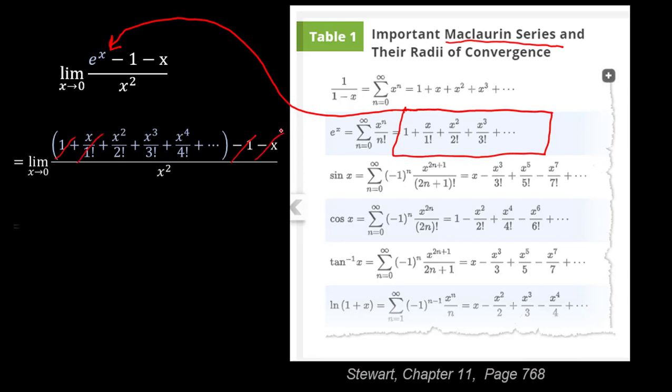So doing those simplifications, we end up with the limit as x approaches zero of x squared over two factorial plus x cubed over three factorial, et cetera, all over x squared. Now we haven't made any clear progress at this point because if we just went ahead and plugged in x equals zero, we're still going to end up with a bunch of zero terms on the top and zero squared on the bottom, which would give us zero over zero, which is still undefined.